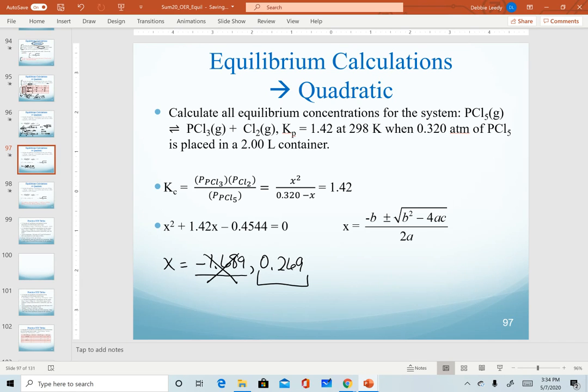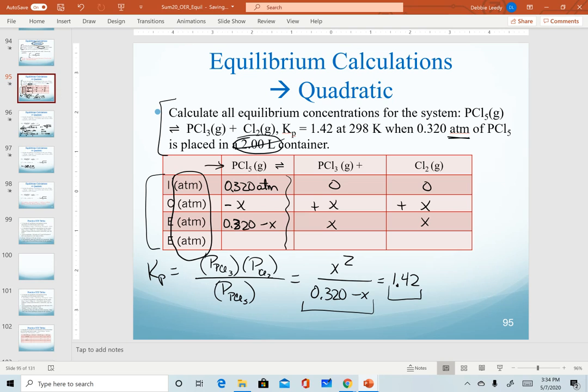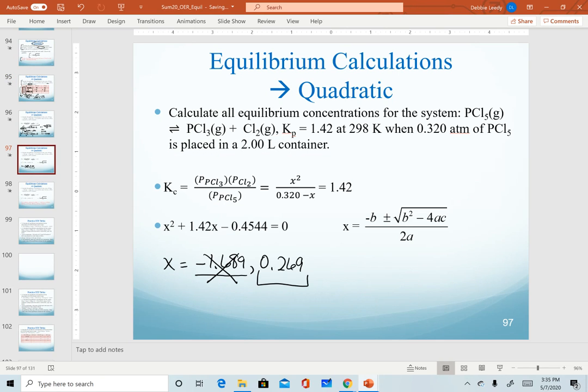But realize even if both of my quantities, my solutions for x were positive, if we go back to our ICE table, it turns out that when we plug values in, if they're both positive, one of them when I plug in for PCl5 would give me a negative value. And so whichever one is negative or returns a negative value can't be the valid answer. So in this one, we know our final solution for x is 0.269.